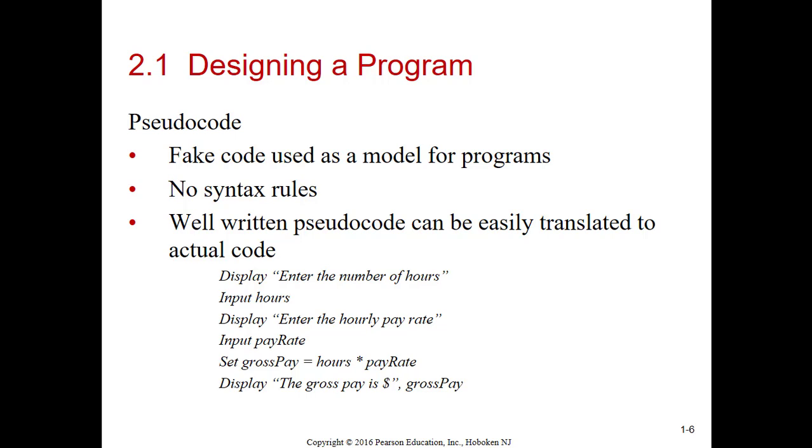To get something from the screen that the user types in, use the input statement. The set statement is used to do an assignment statement. An assignment statement takes what's to the right of the equal sign and stores it to the variable on the left. You can see it's going to multiply the hours times the pay rate and store it in a variable called gross pay. Then it's going to output to the user what the gross pay is.